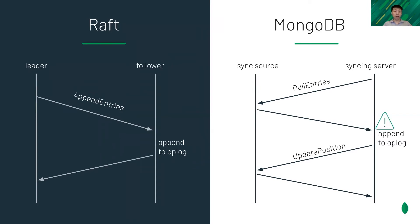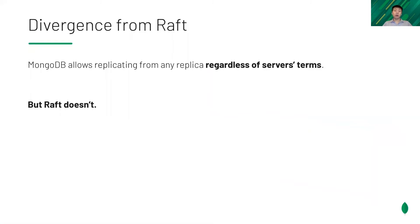The problem happens here. In Raft, the leader's term is checked by the follower, but there's no equivalent in pull entries, because the sync source could be a secondary. Even if its term is up-to-date, it can still roll back soon. As a result, MongoDB allows replicating from any replica regardless of the server's terms, but Raft doesn't. This behavioral difference requires a careful revisit of the correctness.